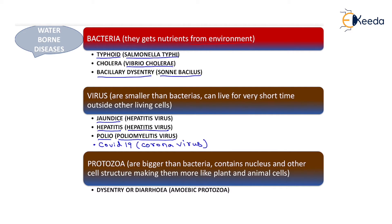The last category is Protozoa. Protozoa are bigger than bacteria and contain a nucleus and other cell structures, making them more like plant and animal cells. The disease created by Protozoa is Dysentery or Diarrhea, caused by Amoebic Protozoa. That covers the complete water-borne diseases as per the GATE syllabus. Thank you very much, students.